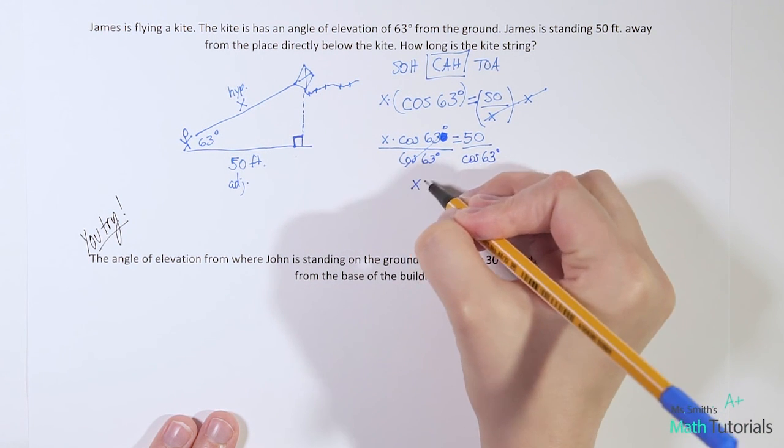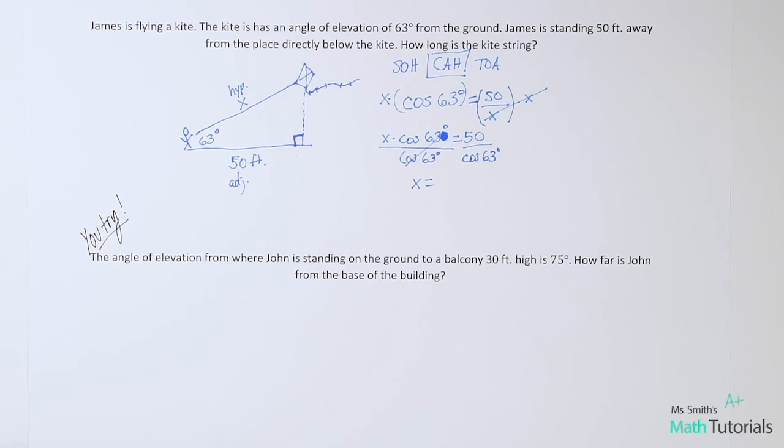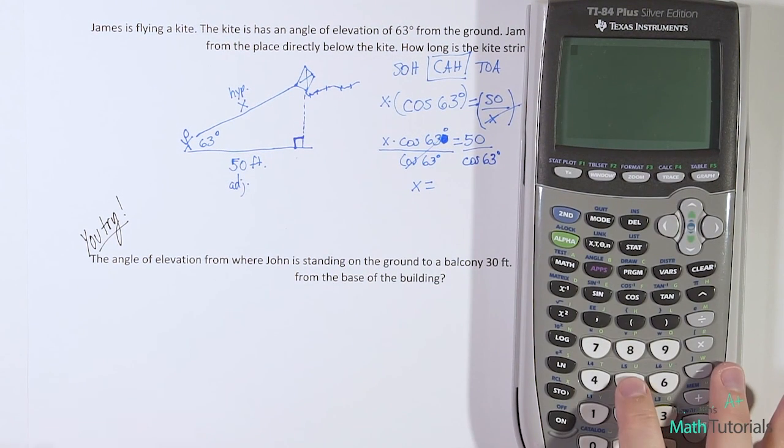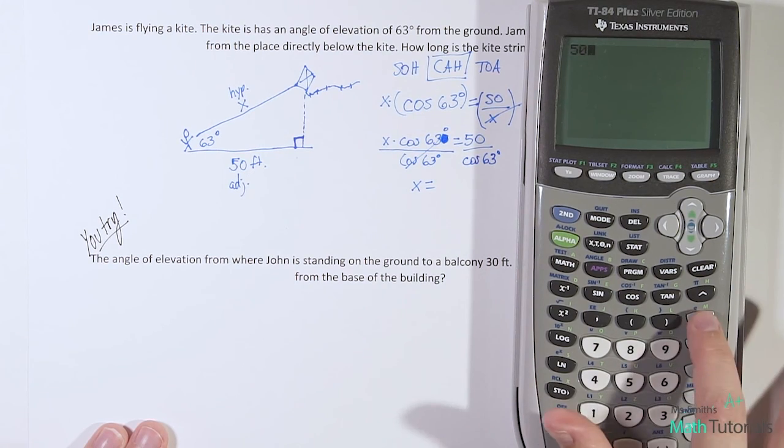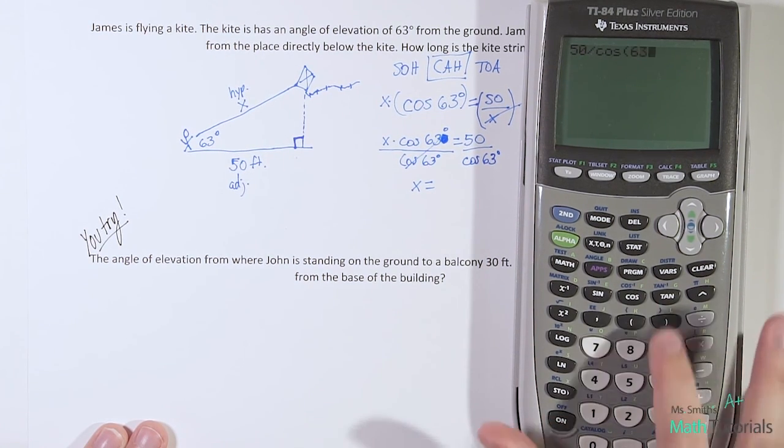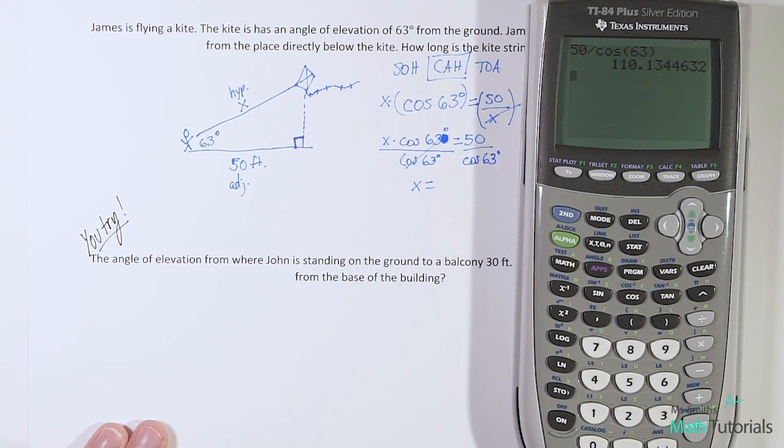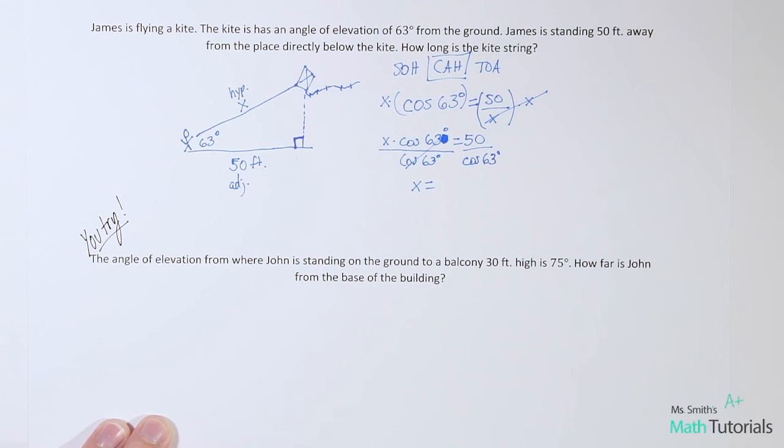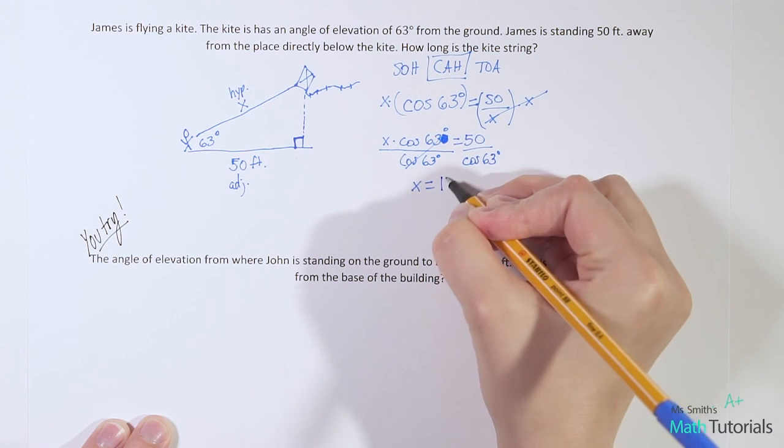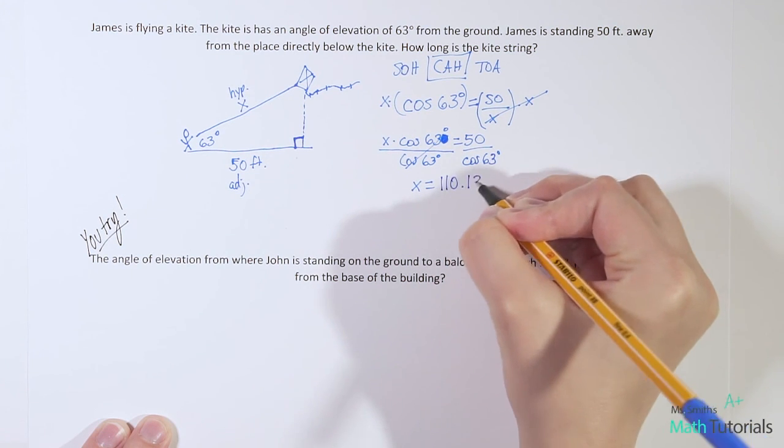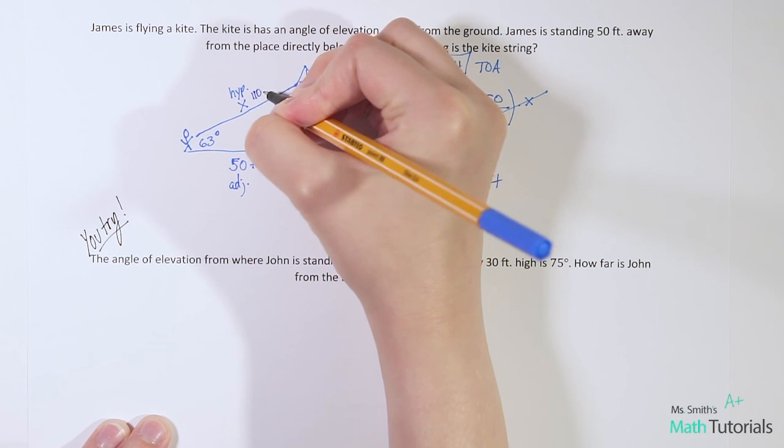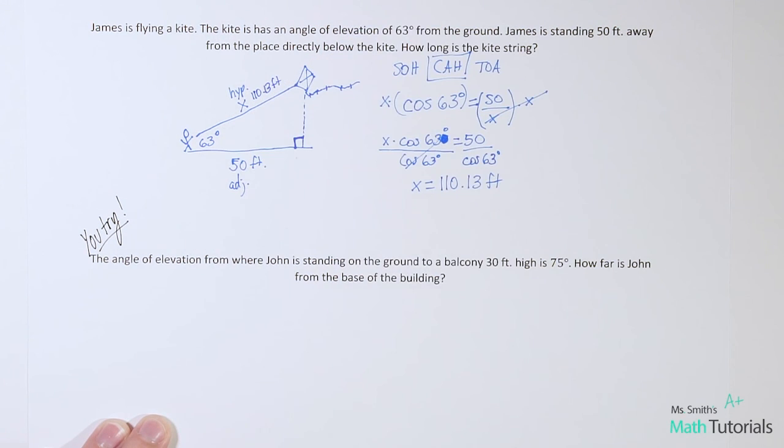So I have x equals, now I can actually divide this using my calculator, as long as I'm in degree mode. 50 divided by cosine of 63, and that gives me 110.13 feet. This distance is 110.13 feet.